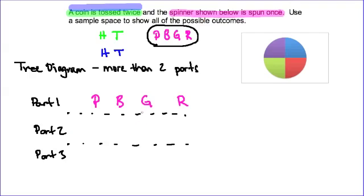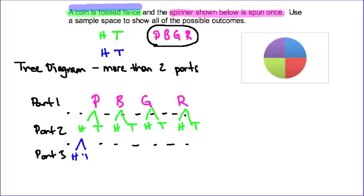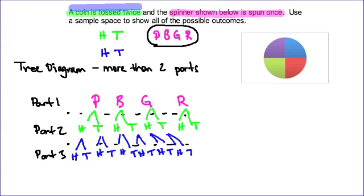For the second part of the event I'll use the first coin toss. If I get purple with the spinner I can still get heads or tails on the coin. The same applies for blue, green, and red — each can still result in heads or tails. And likewise for the second coin toss in part 3: regardless of what happens in parts 1 or 2, I can still get heads or tails for each branch.